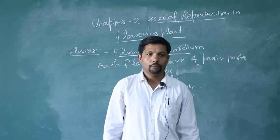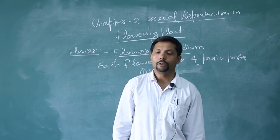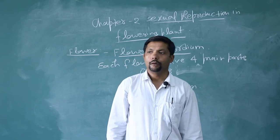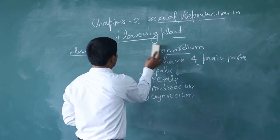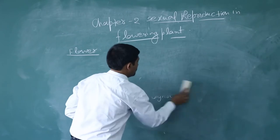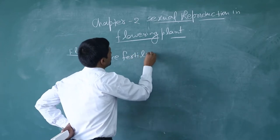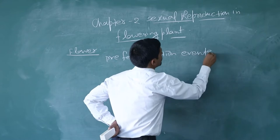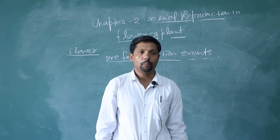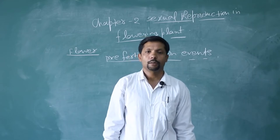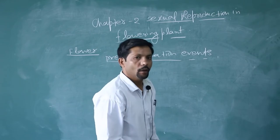In sexual reproduction, you have studied the pre-fertilization events and post-fertilization events in the first chapter. Here we are going to discuss the pre-fertilization events that take place in flowers. In flowers, both male and female reproductive parts are present, and such flowers are called bisexual flowers. First of all, we have to study the structure of different parts — male and female.